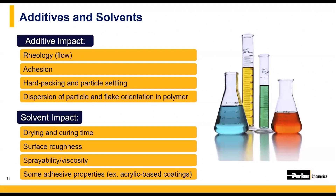Overhead applications will require solvents that result in less dripping. Finally, in some instances — such as acrylic binder systems on plastic substrates — adhesion properties are based on the solvent actually attacking the microscopic surface layers. A stronger solvent such as MEK can be mixed into a paint solution to attack the plastic and allow for greater adhesion.